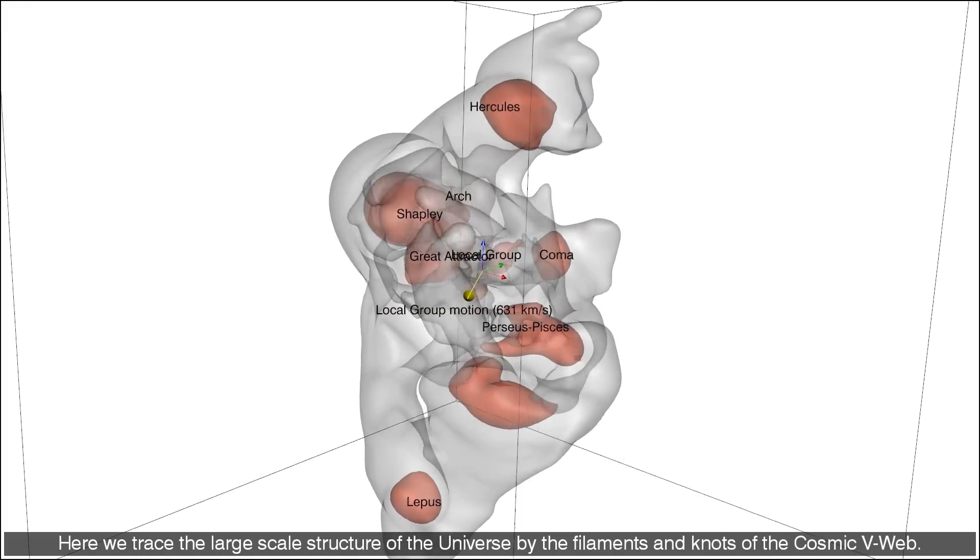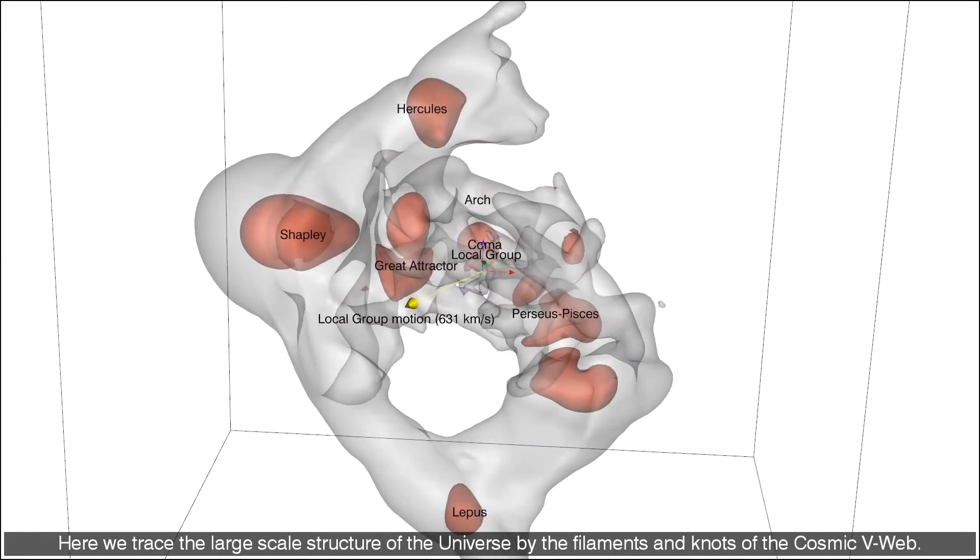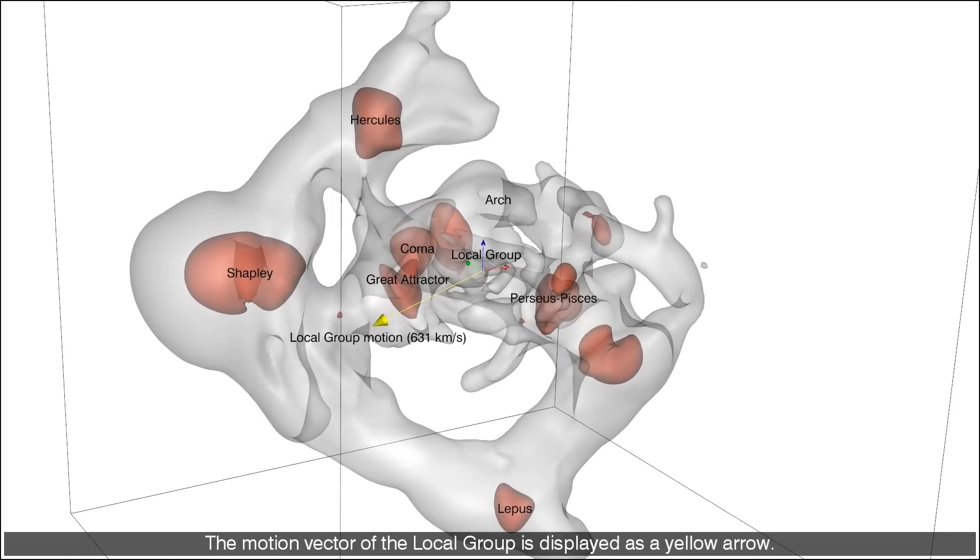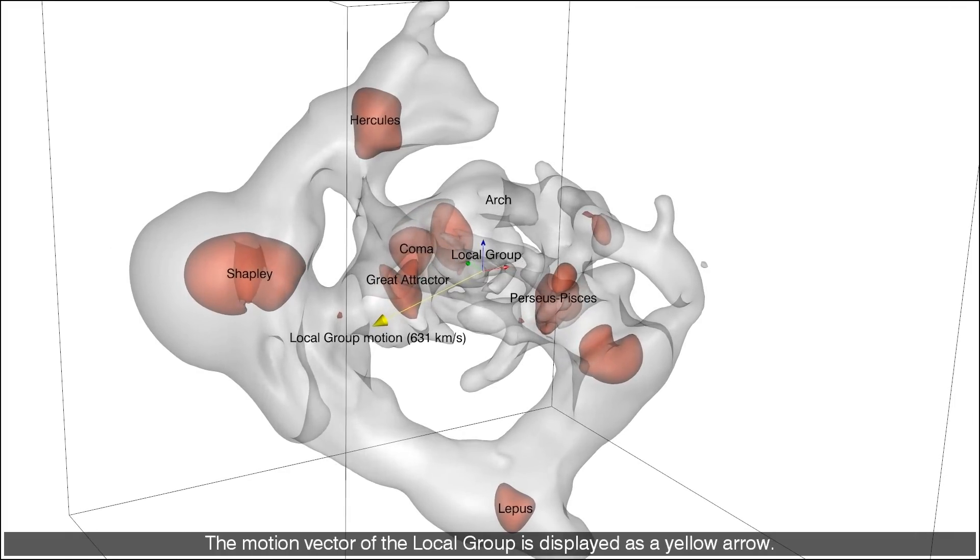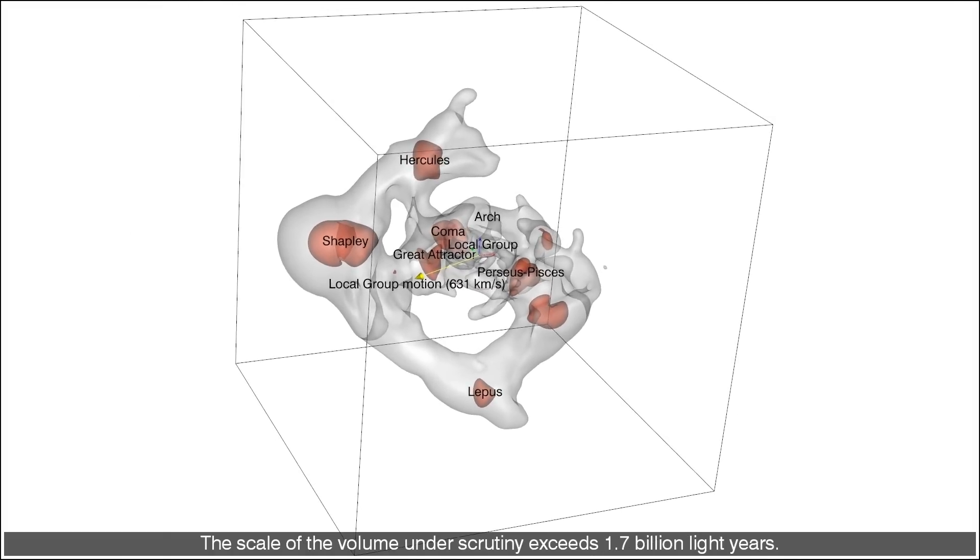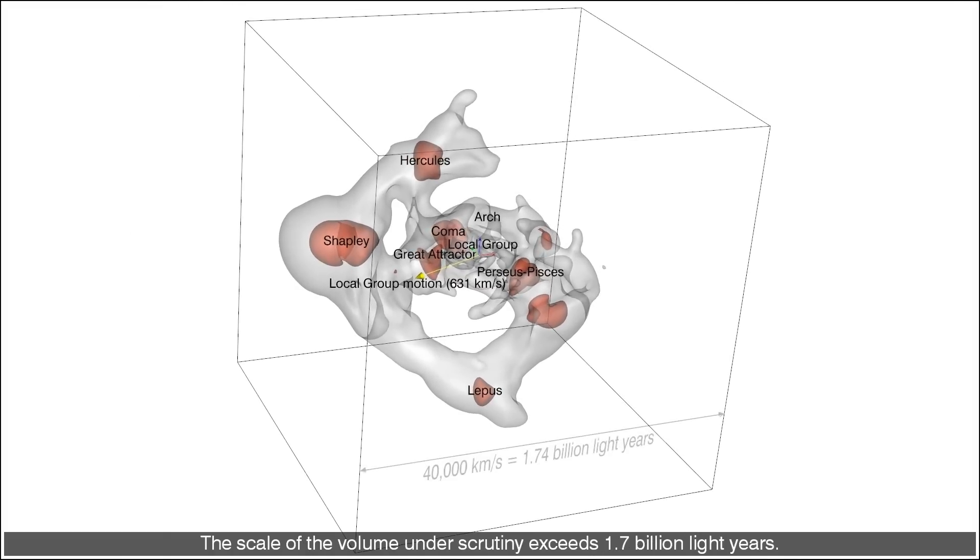Here we trace the large scale structure of the universe by the filaments and knots of the cosmic web. The motion vector of the local group is displayed as a yellow arrow. The scale of the volume under scrutiny exceeds 1.7 billion light years.